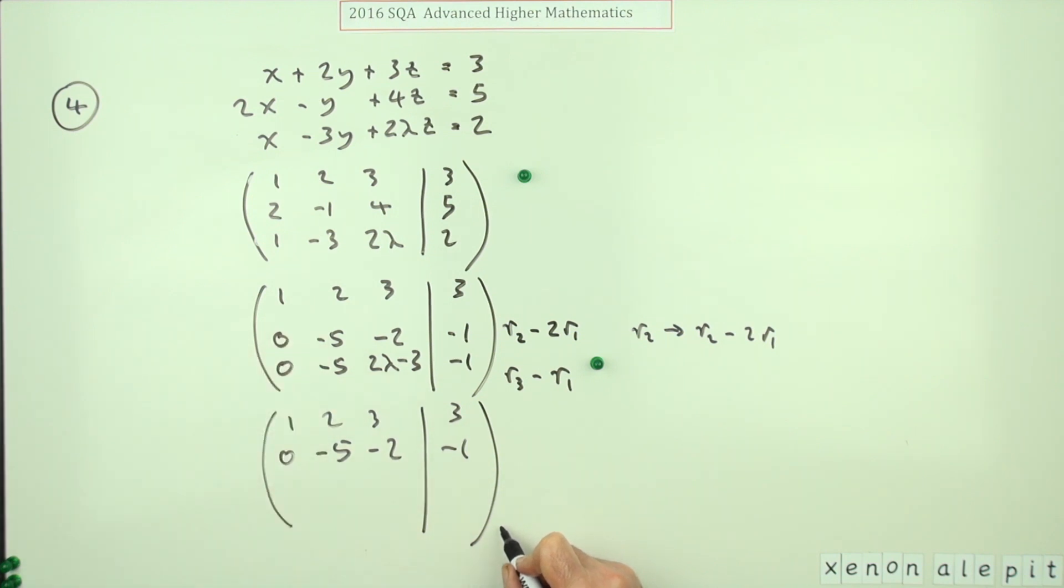But these two rows, let's just subtract them. Row three take away row two. So zero take away zero is zero. Negative five take away negative five is zero. Two lambda minus three, but that'll give you a plus two, so two lambda minus one. And for this part, of course it comes to zero.